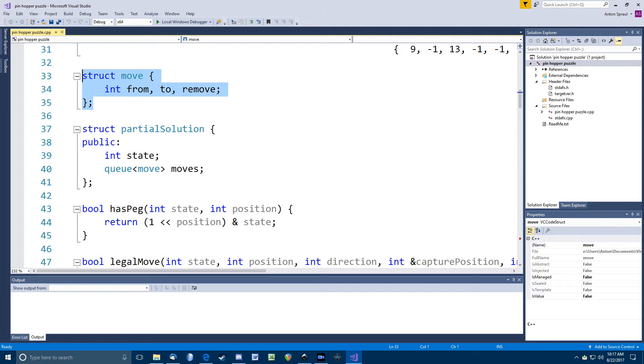So, my move class has members from, to, and capture. These will all be integers representing positions indicating where a peg was, where it went to, and what peg was removed in the jump. Then, I made a partial solution struct that holds a board state and a queue of my move struct. So, this will hold a particular board state and all the moves it took to get there.